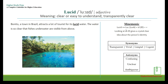The mnemonic for remembering lucid can be done by breaking it apart as 'loose + id' or 'look + id' — looking at an ID gives a crystal-clear idea about a person's identity. Synonyms: transparent, vivid, limpid, cogent. Antonyms: confusing, unclear, ambiguous.